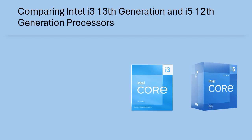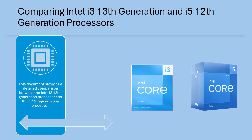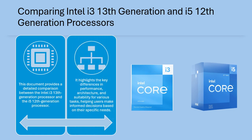Comparing Intel i3-13th generation and i5-12th generation processors. This document provides a detailed comparison between the Intel i3-13th generation processor and the i5-12th generation processor. It highlights the key differences in performance, architecture, and suitability for various tasks, helping users make informed decisions based on their specific needs.